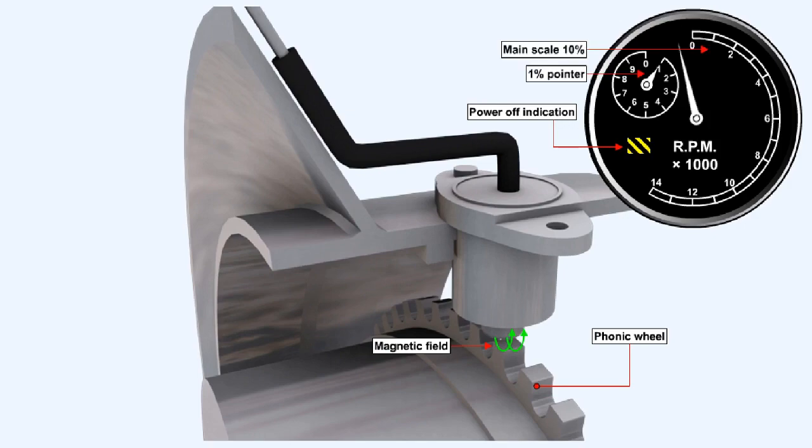Clockwork cockpit instruments have displays which show percentage rotational speed, with 100% corresponding to the maximum spool RPM. Two scales are used: a main scale calibrated 0 to 100% in 10% increments, and a second pointer displays rotational speed in 1% increments.